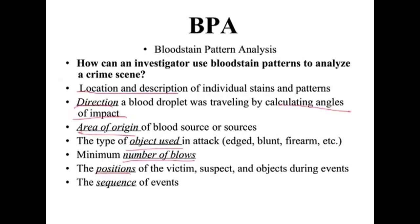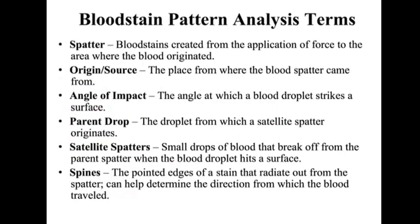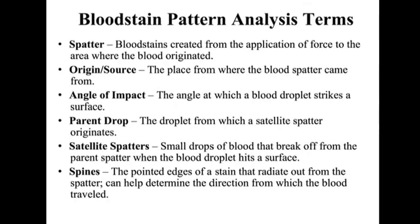We can also determine positions, shown in some of the videos we've watched or will watch. The sequence of events can be determined by understanding how the blood spatters are. Some vocabulary: spatter, origin source, angle of impact, apparent droplet (the initial one), satellite spatter (when a drop hits a drop and causes a splash), and spines, which are the pointed edges that radiate outward from the spatter. I recommend pausing here and making sure you have all these words written down.